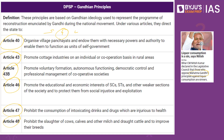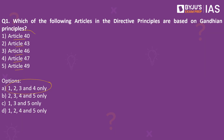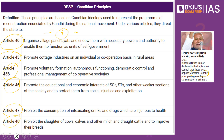Remember, all these Gandhian principles when it comes to directive principles are only in the 40s and not in the 30s or 50s. This is one of the important pointers from the preliminary examination point of view. Article 40, Article 43, Article 46 and Article 47 belong to the Gandhian principles, and Article 49 does not fall under the Gandhian principle.